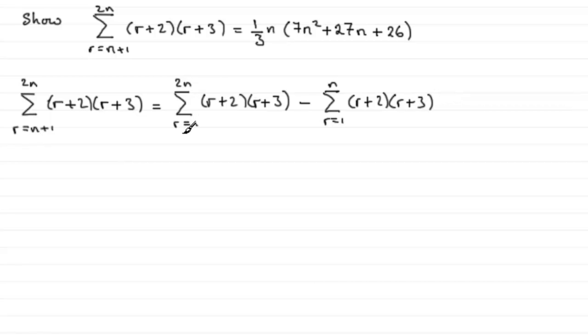So look at the first 2n terms and then subtract the sum of the first n terms, and that will give you the set of terms n+1 up to 2n.